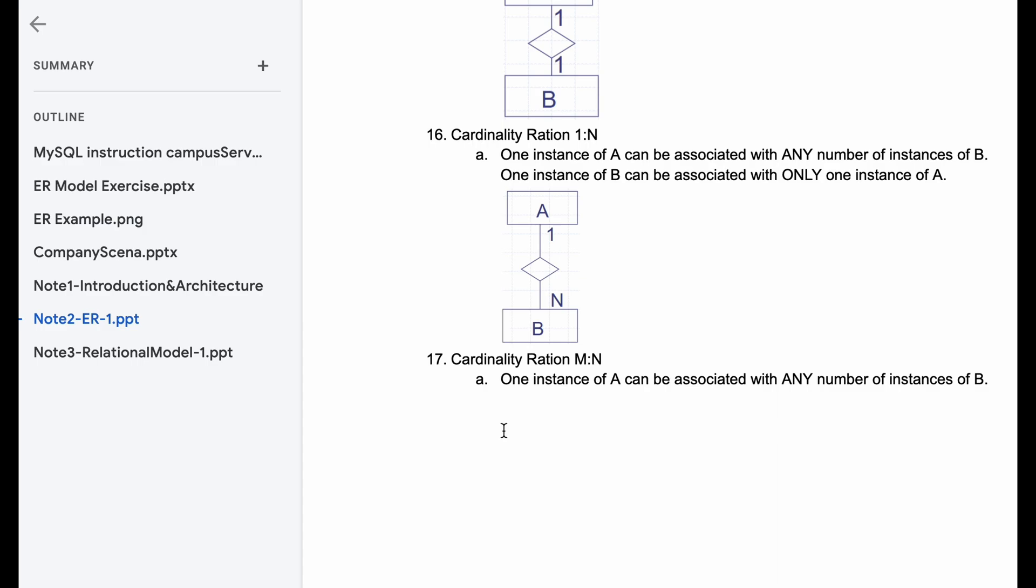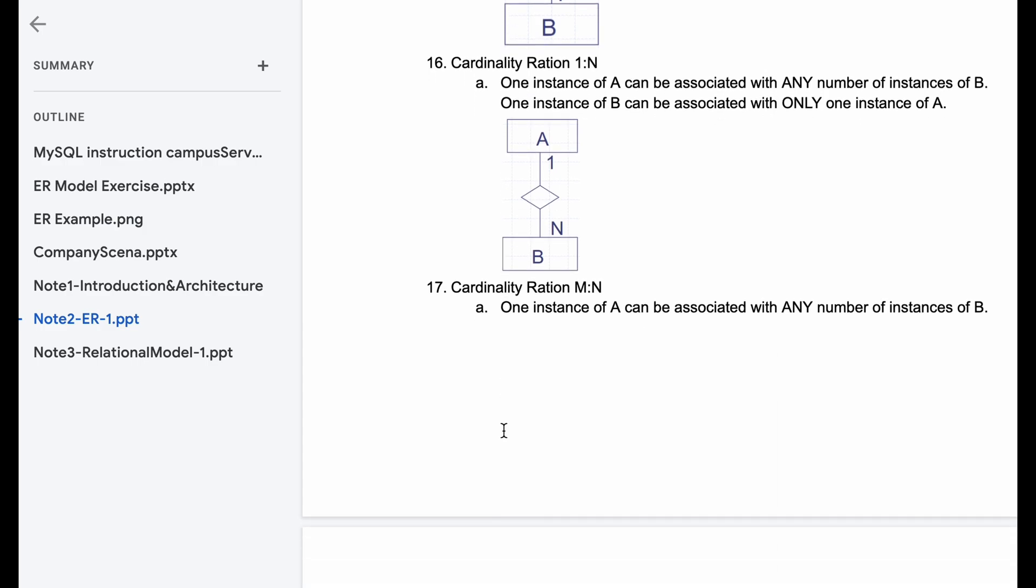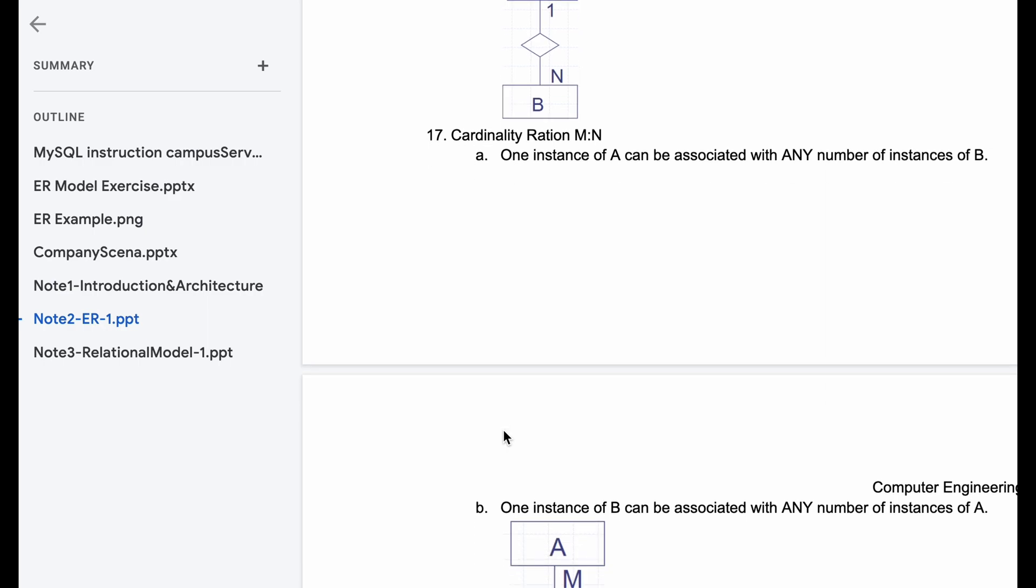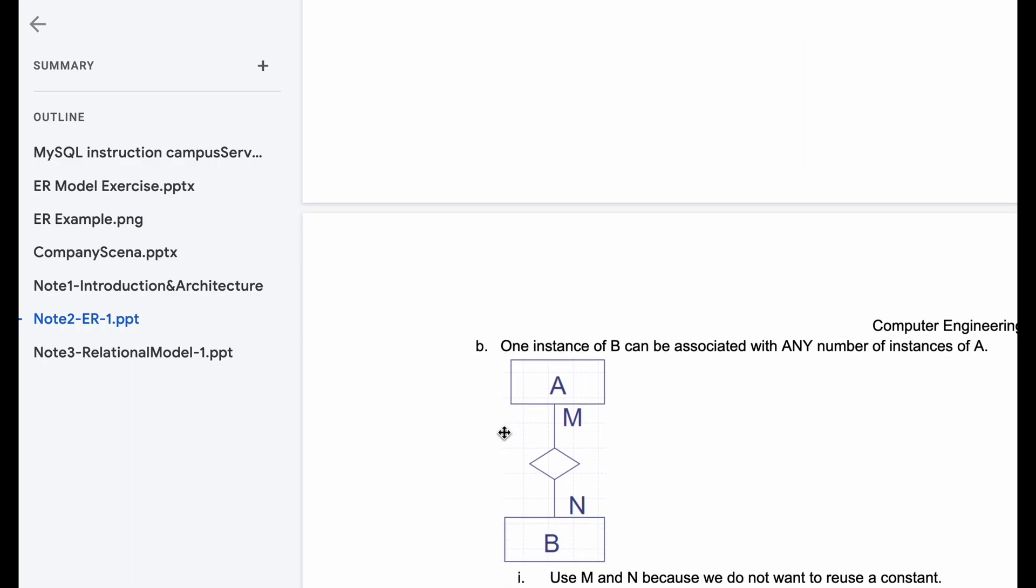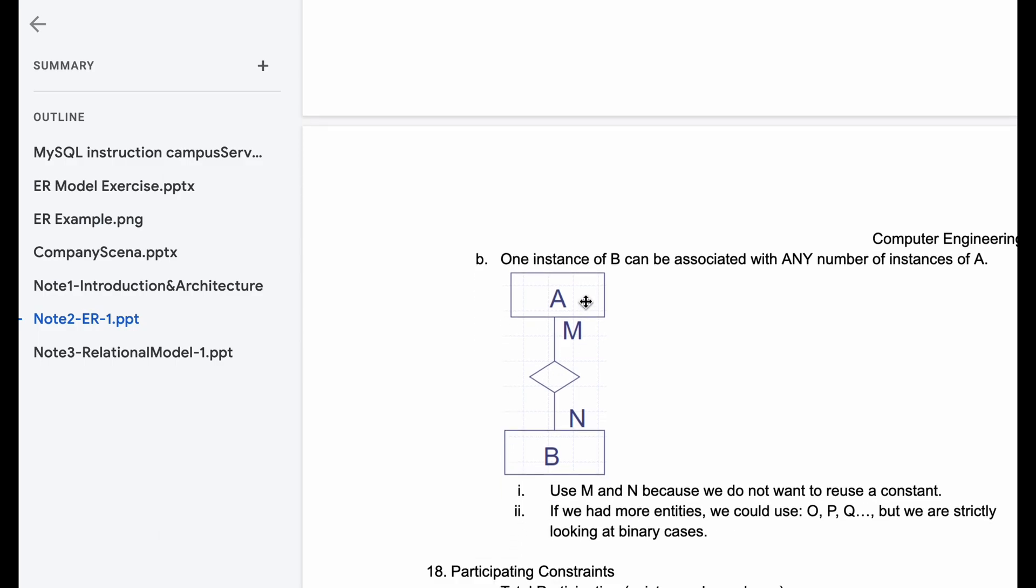Next on our cardinality ratio, M-N, which is many-to-many. So here one instance of A can be associated with any number of instances of B, and one instance of B can be associated with any number of instances of A. So if we have our employee, we have a project. So employee works on this project.